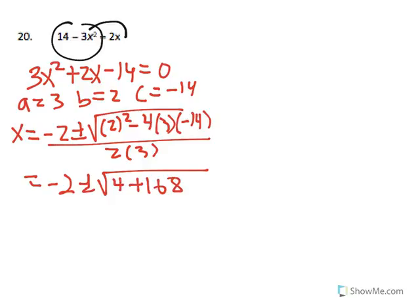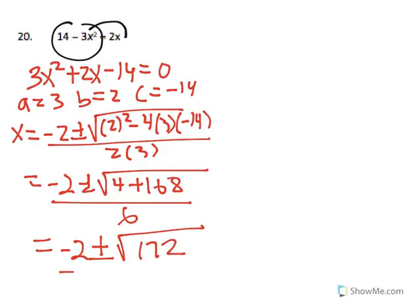So this gives us negative 2 plus or minus square root of 172 all over 6.